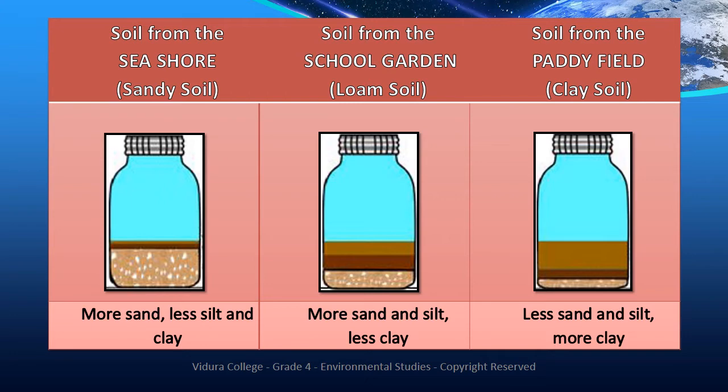You will see separate layers of gravel, sand, mud or silt, clay, and some floating particles. Sandy soil from the seashore contains more sand and less silt and clay. Loam soil from the school garden contains more sand and silt and less clay. Clay soil from the paddy field contains less sand and silt but more clay.